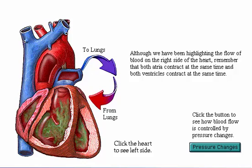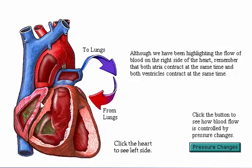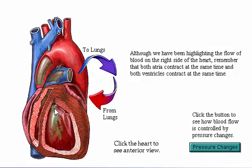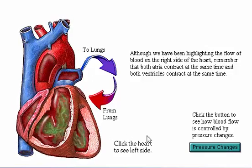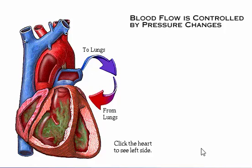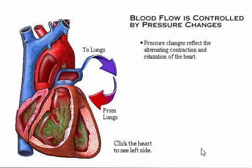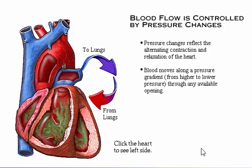Blood flows from the pulmonary arteries to the lungs and then returns to the left atrium via the pulmonary veins. Remember that pressure changes reflect the alternating contraction and relaxation of the heart. Blood moves along a pressure gradient from higher to lower pressure through any available opening, and pressure changes cause the heart valves to open and close, which keeps blood flowing in the forward direction.